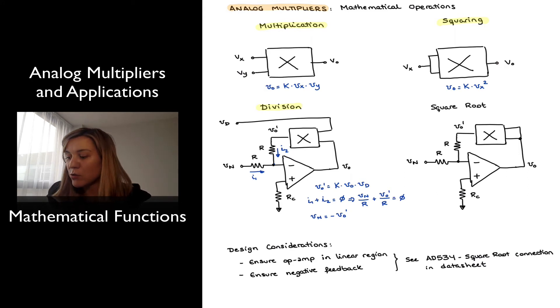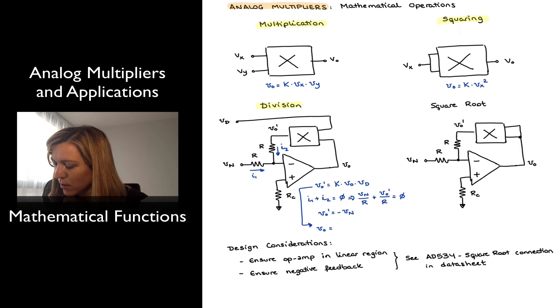Or vout prime being equals to negative vn. Perhaps that's a better way of expressing it. And now I can go back to my original equation and try to solve for vout of my circuits. And I have that vout is going to be equal to vout prime divided by k times vd.